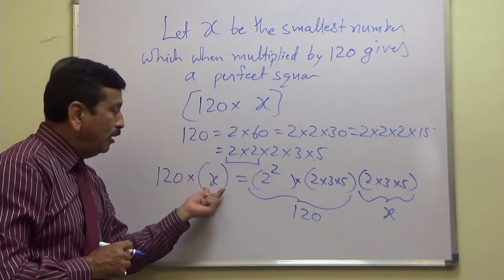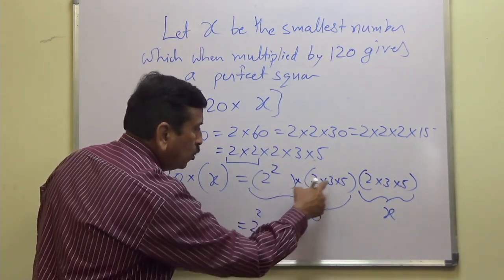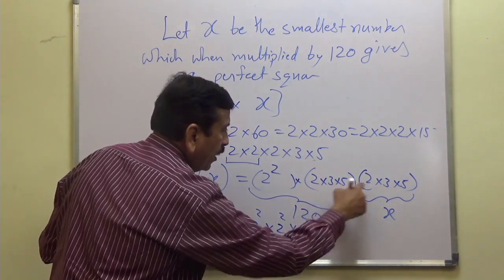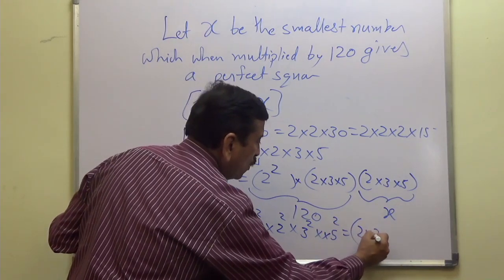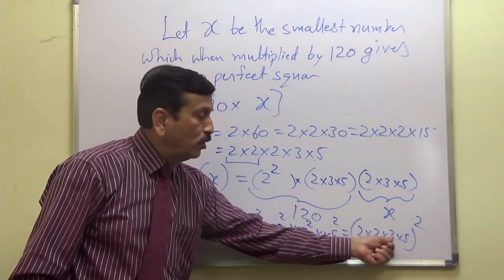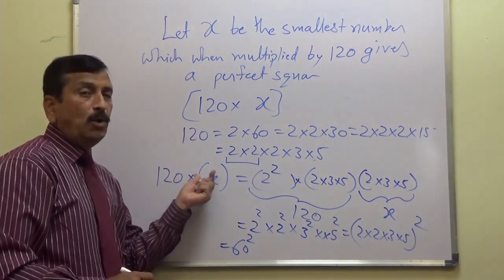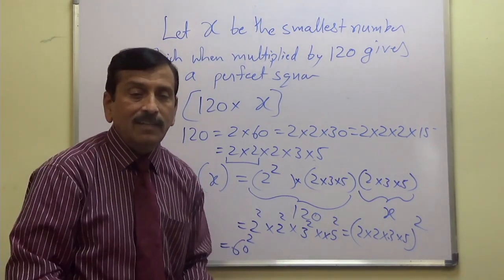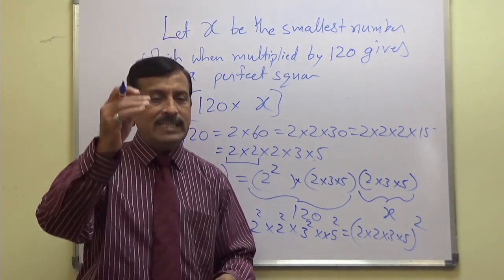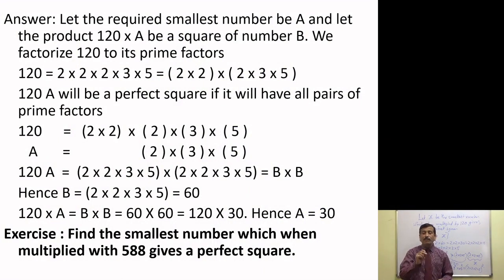So x equals 2 into 3 into 5, which is 30. That means if 120 is multiplied by 30, it gives a perfect square. 120 into 30 becomes 2² into 2² into 3² into 5² equals 60², which is a perfect square. The answer is x equals 30. As an exercise, find the smallest number which when multiplied with 588 gives a perfect square. The answer will be shared later.